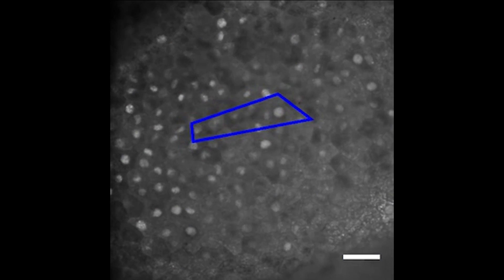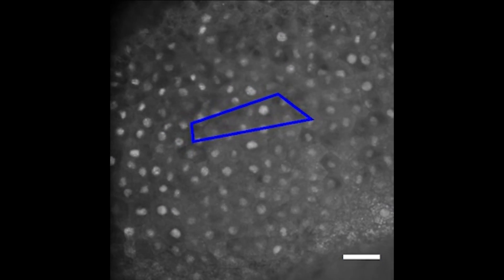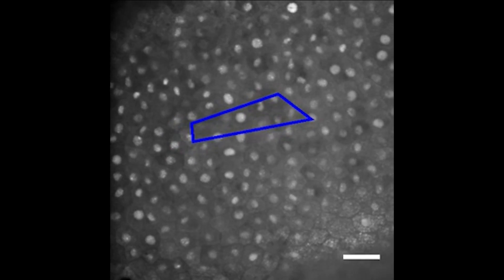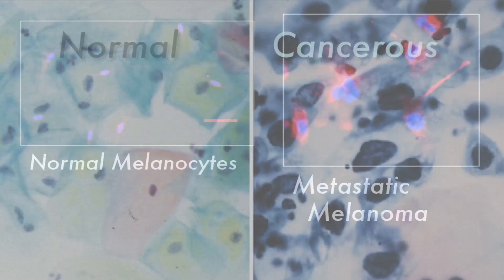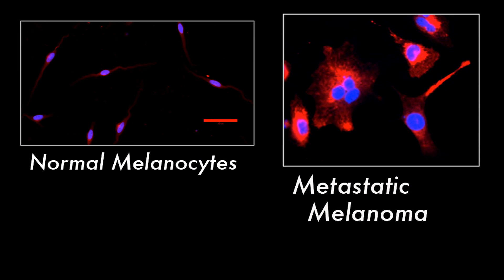What my lab is really interested in understanding is what controls the size of the nucleus. Big cells tend to have larger nuclei; small cells tend to have smaller nuclei. There's a really interesting disease connection in that in cancer cells, nuclei become inappropriately enlarged. This change in nuclear size is used diagnostically, but what isn't known is whether this change in nuclear size might be important for the development or progression of the cancer.